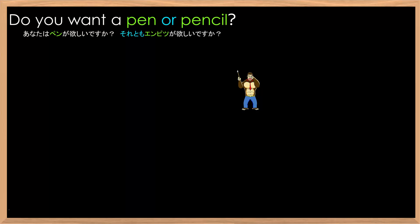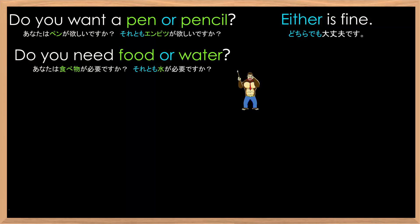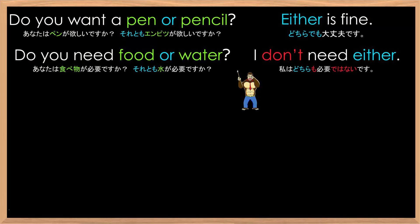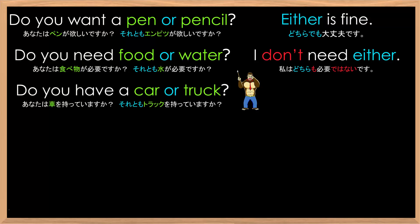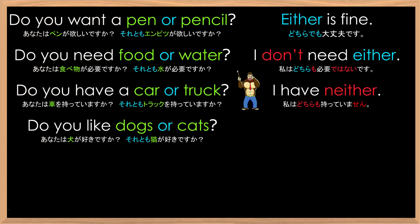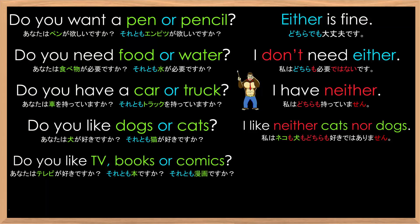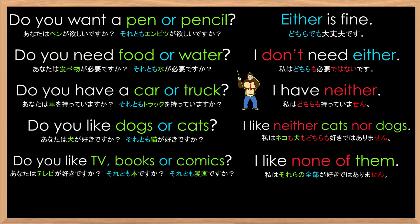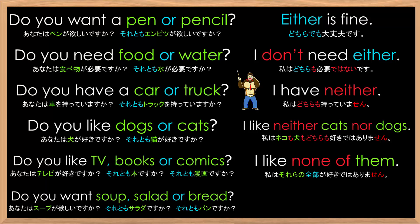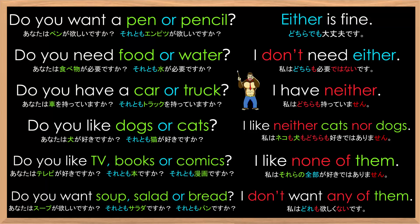Let's practice with some other sentences. 'Do you want a pen or pencil?' 'Either is fine.' 'Do you need food or water?' 'I don't need either.' 'Do you have a car or truck?' 'I have neither.' 'Do you like dogs or cats?' 'I like neither cats nor dogs.' 'Do you like TV, books, or comics?' 'I like none of them.' 'Do you want soup, salad, or bread?' 'I don't want any of them.'